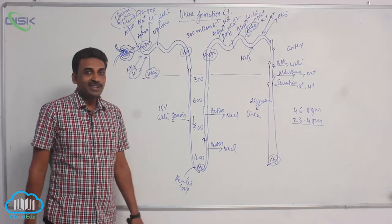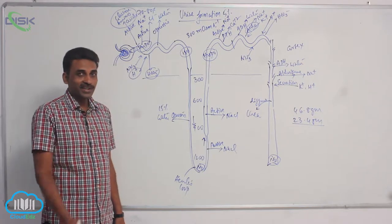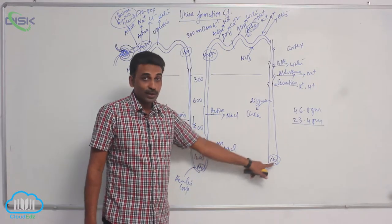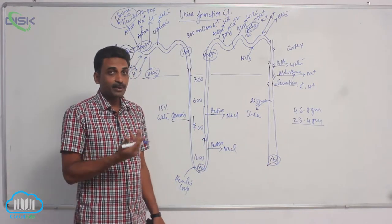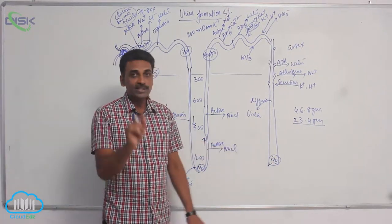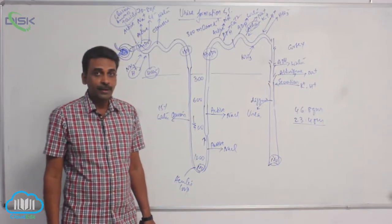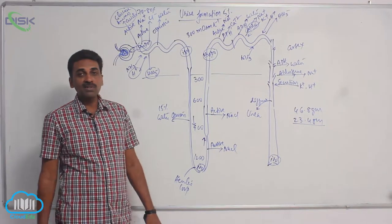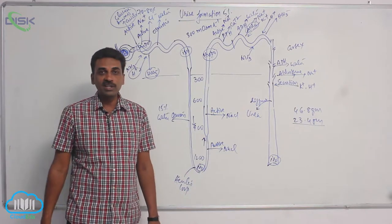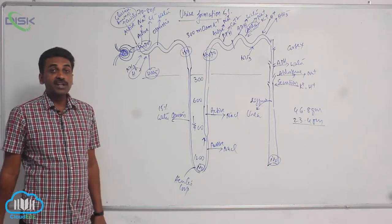The final urine formed is isotonic to medullary fluid but hypertonic to blood plasma. Concentrated urine is formed at 1200 milliosmol per liter, which is isotonic to medullary fluid. When compared to blood plasma, whose concentration is 300 milliosmol per liter, the concentrated urine is several times higher in concentration.